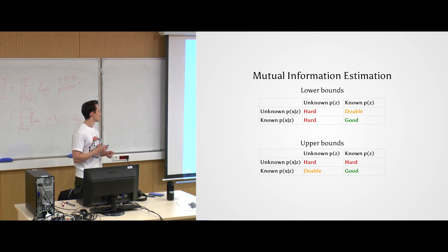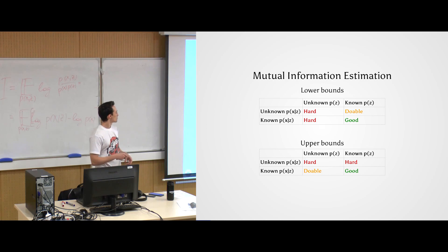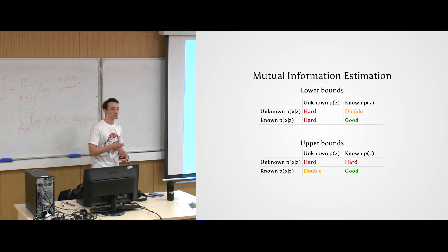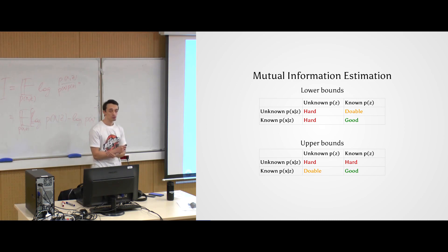For upper bounds, the situation is similar but transposed. Now you need to know the conditional distribution, otherwise things are hard. Not knowing the density is not as punishable. In a sense, these two cases are transposes of each other, and this is not a coincidence. For example, in GANs the generator is an implicit model — you can sample from it easily, but you cannot evaluate its density. Conversely, a neural network outputting an unnormalized log density is something you can evaluate but may not sample from directly.